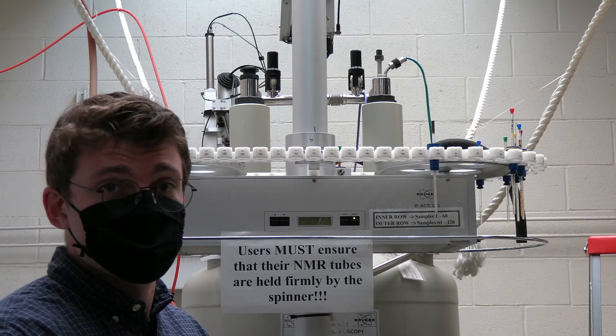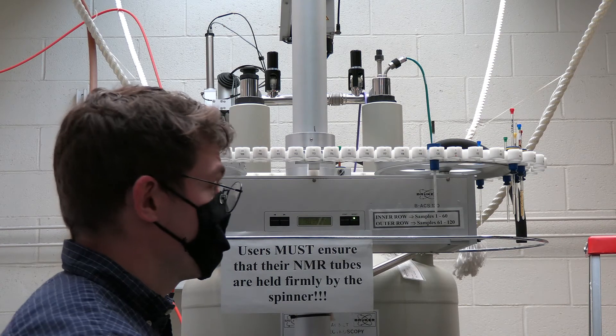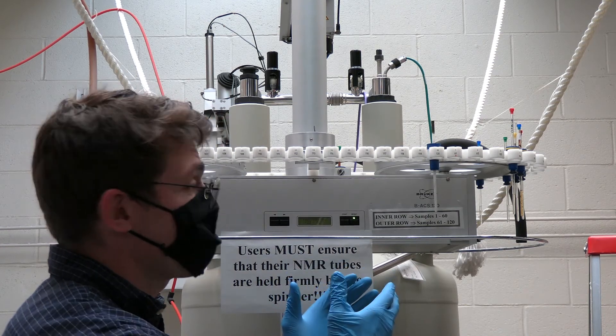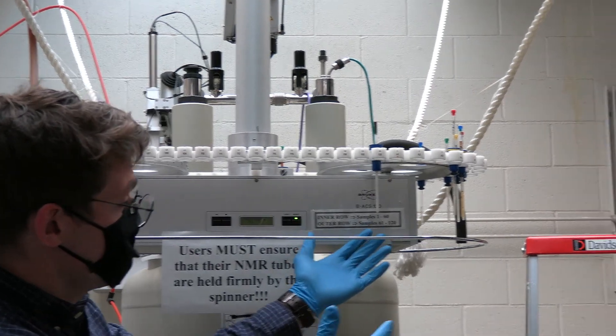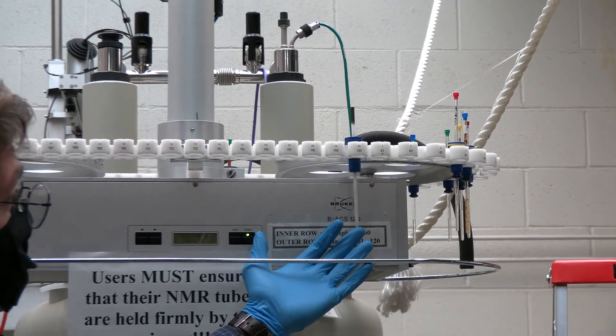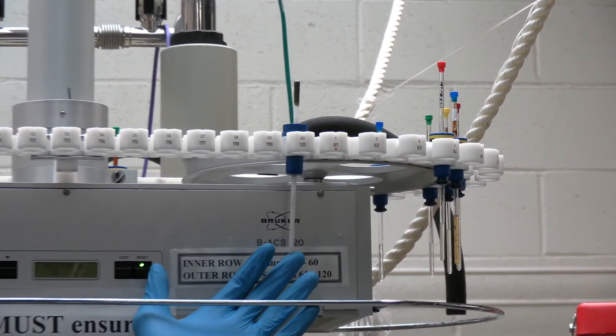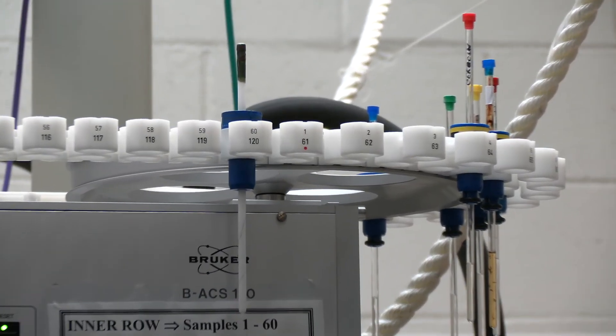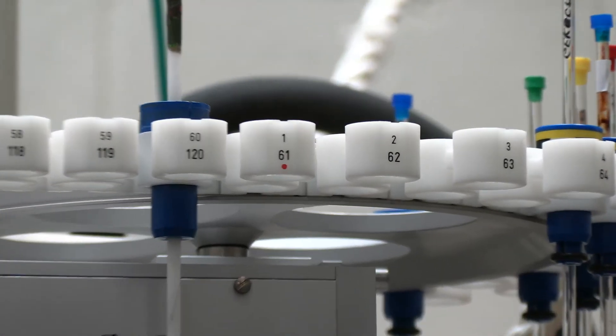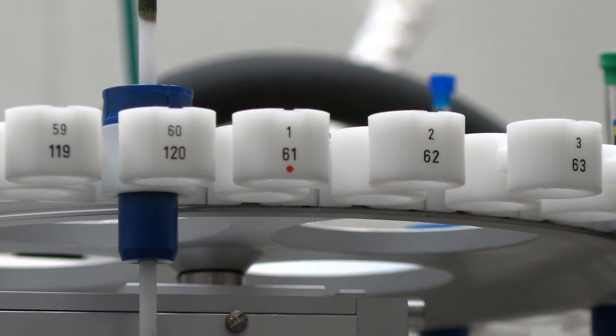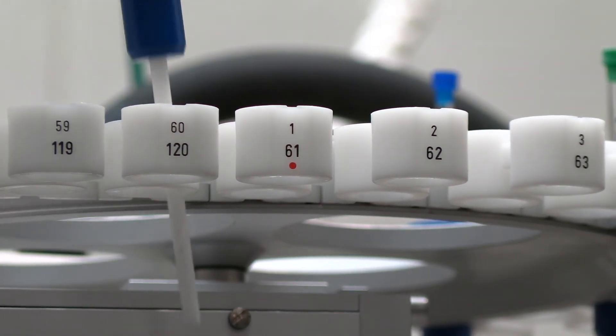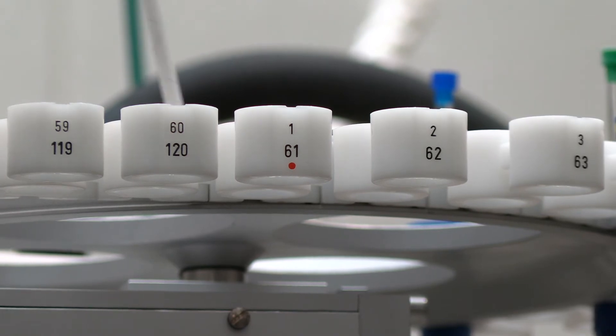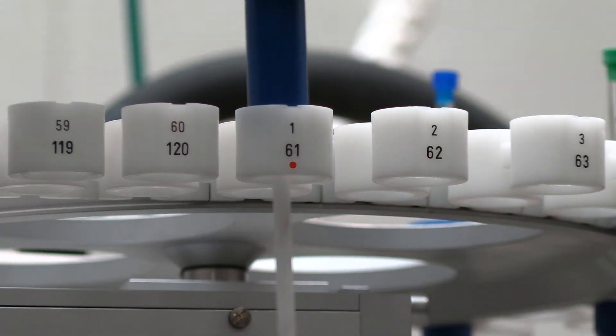One issue that commonly trips users up is the transition from position 60 to 61. Let's say in this hypothetical scenario you walk up to the carousel and the dummy sample is in position 60. As you remove it and place it in the next position which would be in spot 61, that position is now in the outer row. We have marked this position with a red dot as a visual indicator to help remind you to make this transition to the outer row.